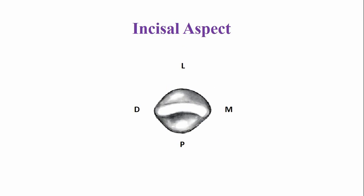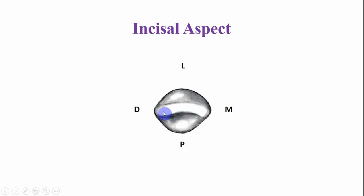This is the incisal aspect. From the incisal aspect, the crown is more circular in shape. The labial surface of the crown is more convex. The crown is much narrower mesiodistally if you compare it with the crown of the central incisor. This is the palatal fossa and this is the cingulum.